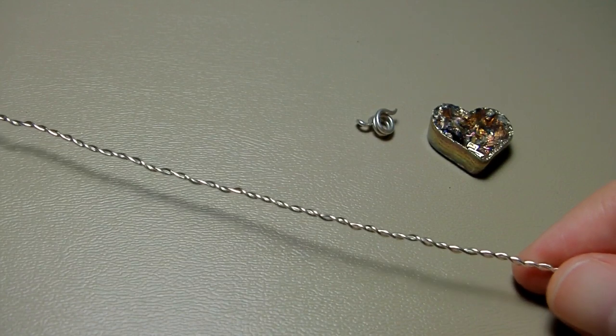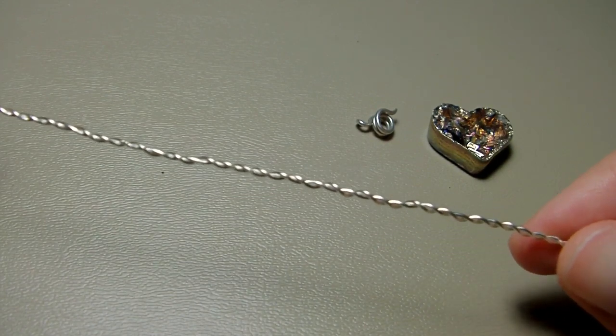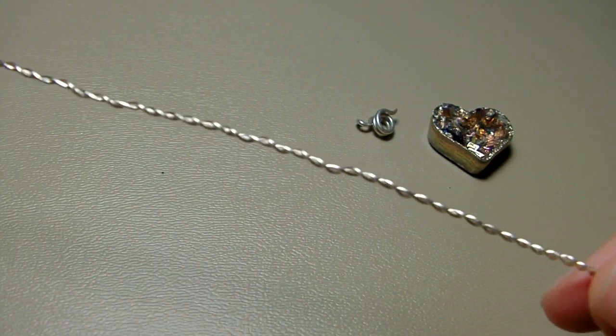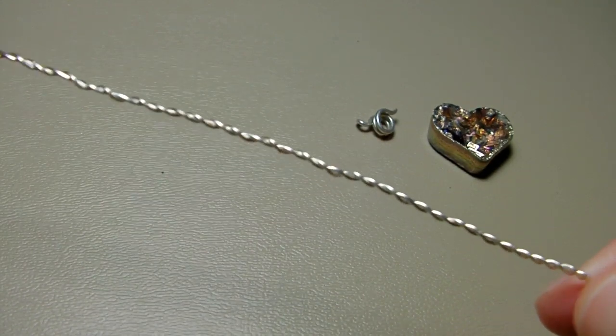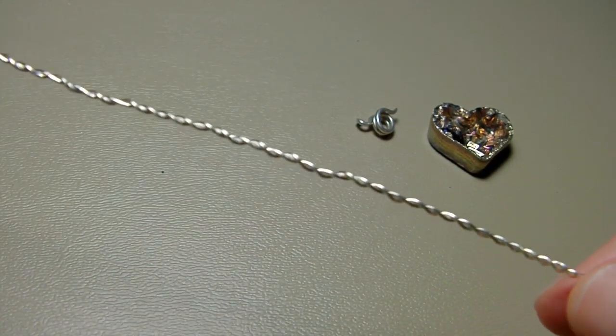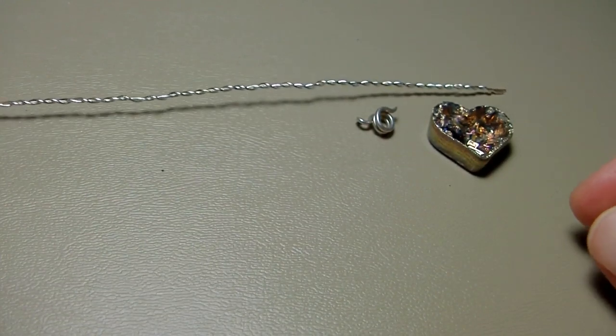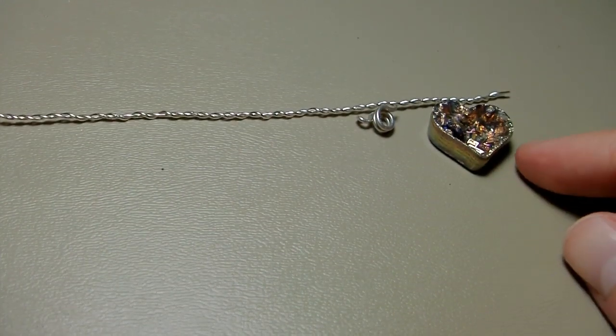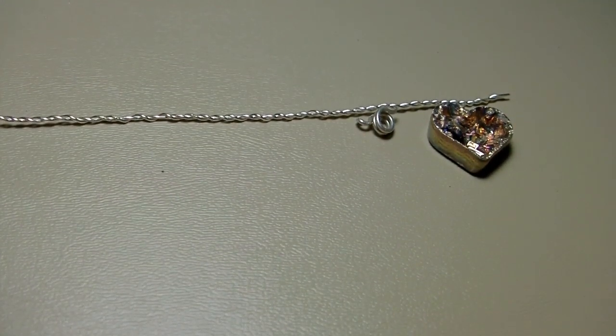Now I'm going to wrap the heart in wire. This is 22 gauge silver wire. So it's very thin. And what I did was I twisted it. I took two pieces and twisted them together to make this sort of braid. And that's what's going to be wrapped around the outside of the heart.